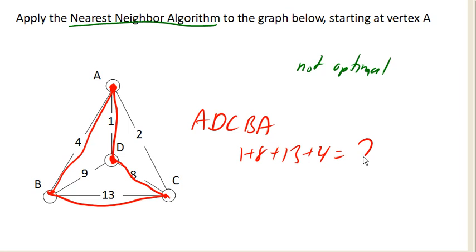Wow, that was like the worst circuit in the graph. So it turns out that, like I mentioned, nearest neighbor algorithm is not always optimal. And here's a case where it certainly gave us a non-optimal result.